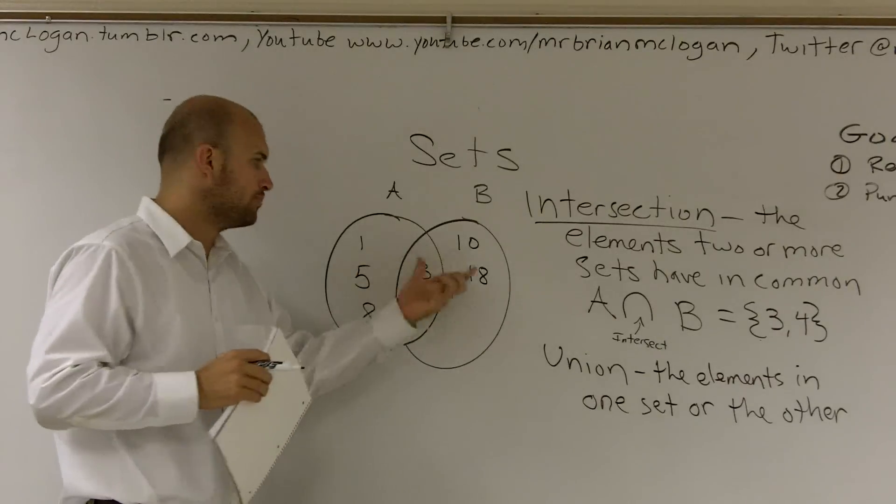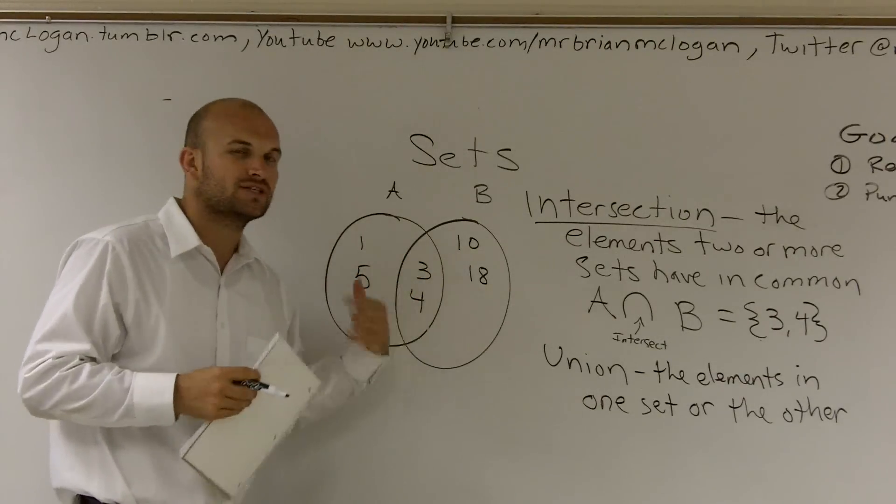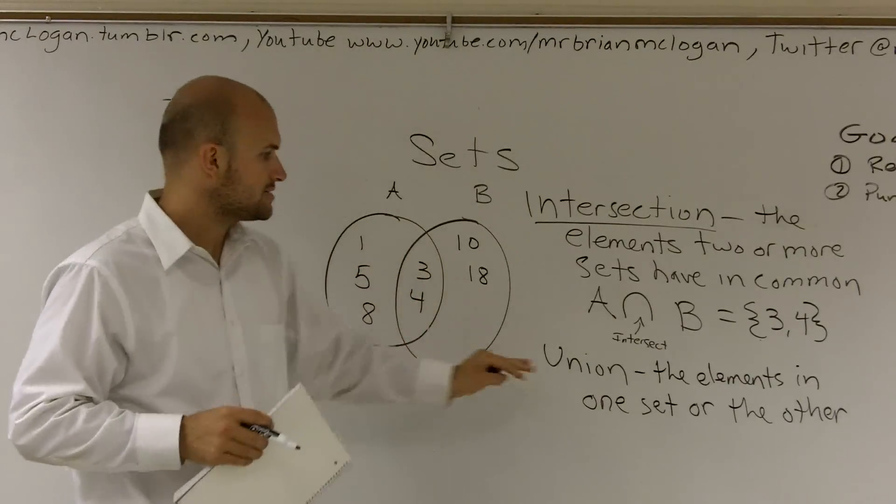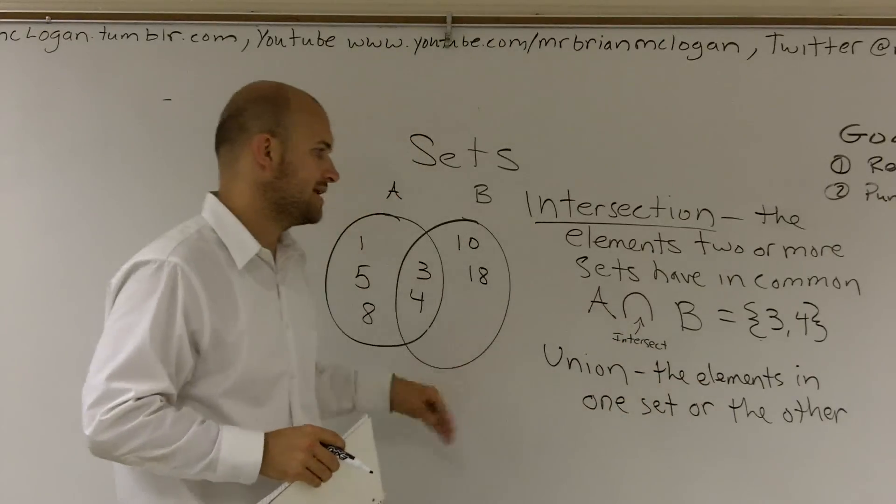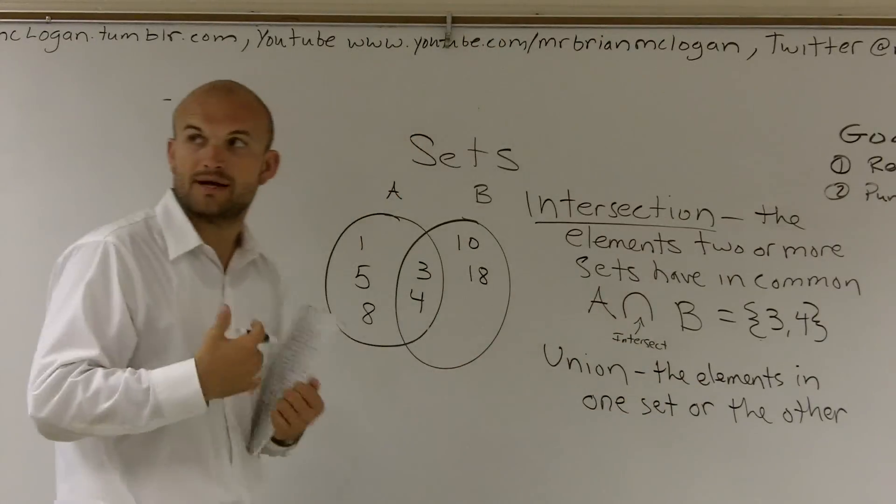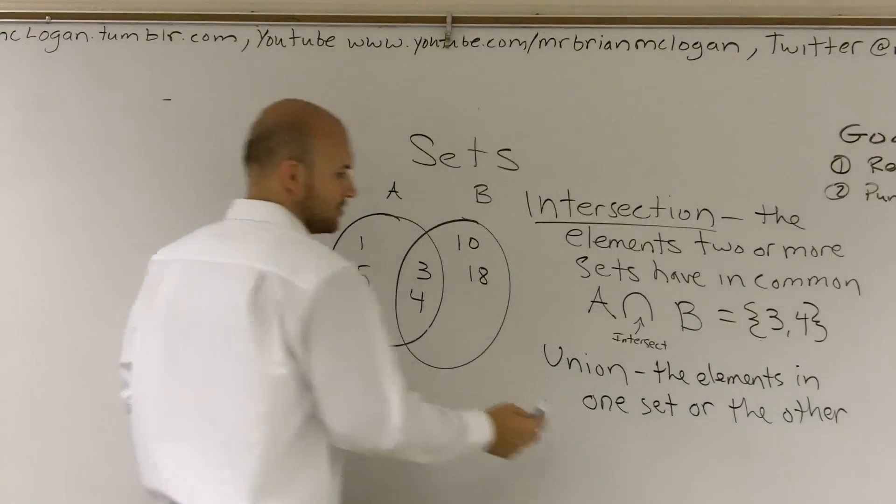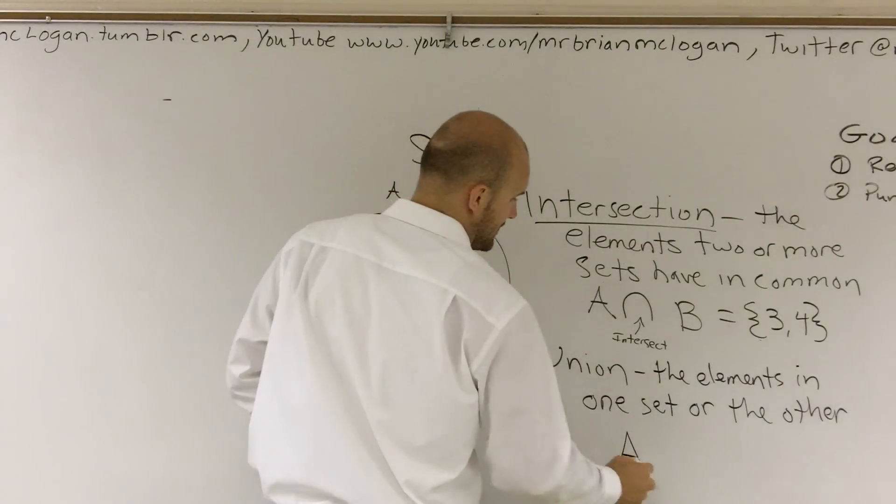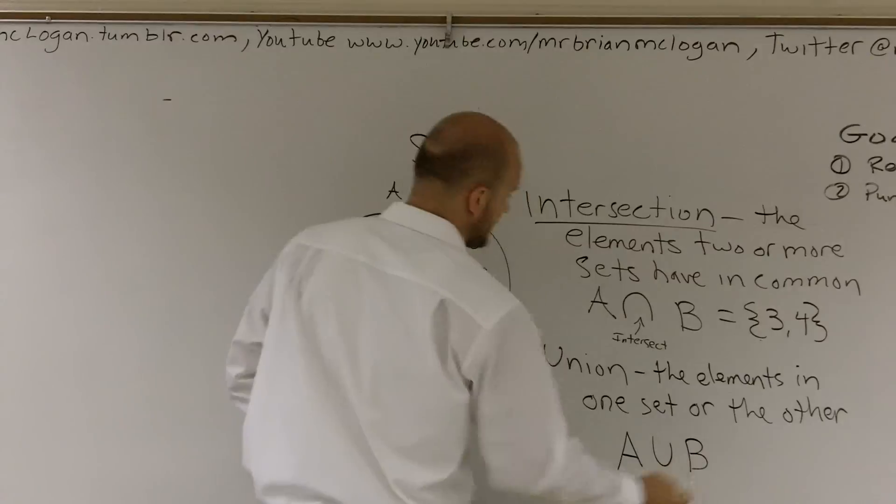Now, sets three and four are both in A and they're in B, we don't need to write them twice. So the union is the elements that are in one set or the other. So it's going to be actually what's in both of those sets. So the way to represent that is A union B.